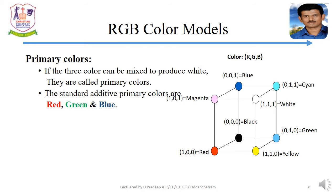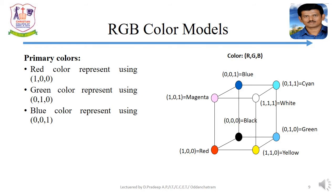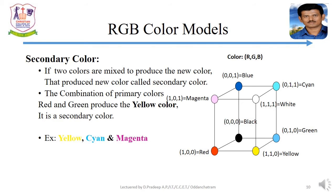If three colors can be mixed to produce white, those colors are called primary colors. The standard additive primary colors are red, green, and blue. In the RGB color model, colors can be represented in a unit cube where values range from 0 to 1. Red is represented by (1, 0, 0), green is represented by (0, 1, 0), and blue is represented by (0, 0, 1).